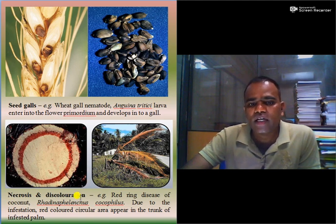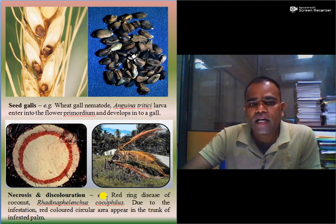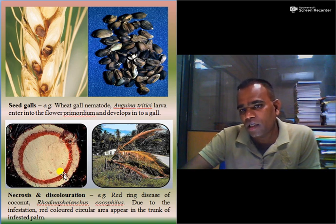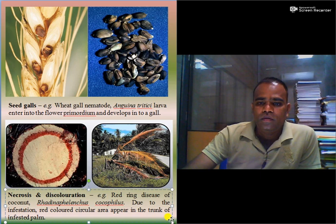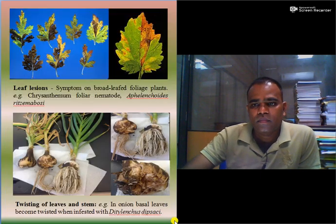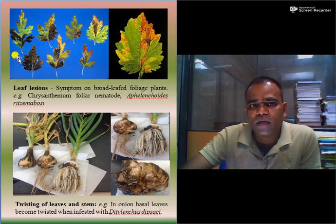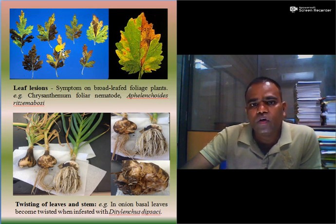Necrosis and discoloration symptoms are produced by red ring nematodes, i.e. Rhadinaphelenchus cocophilus, in case of coconut. Due to this infestation, a red-colored circular area appears in the trunk of the infested palm. Leaf lesions are caused by foliar nematodes of chrysanthemum, i.e. Aphelenchoides ritzemabosi, responsible for causing leaf lesions and leaf lightening on chrysanthemum leaves — symptoms produced on broad-leaf foliage plants.